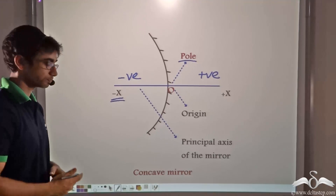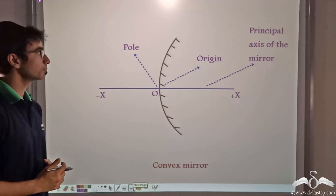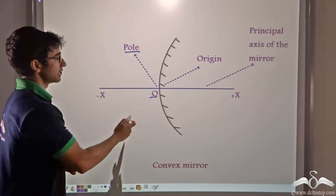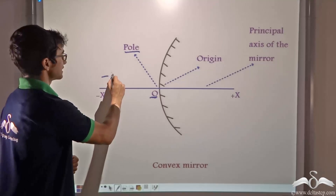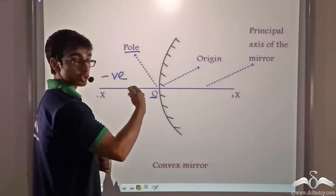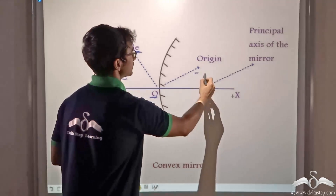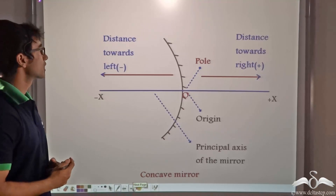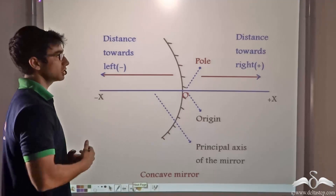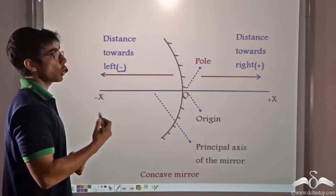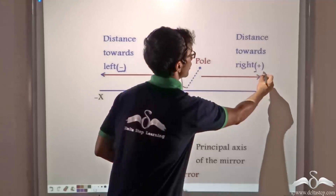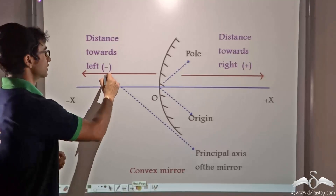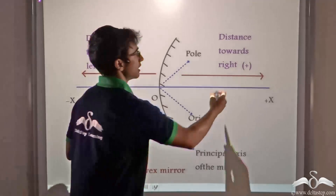In the case of a convex mirror, the pole is also considered as the origin and the principal axis is considered as the x-axis. All points to the left are measured as negative and all points to the right of the pole are measured as positive. All distances measured towards the left of the origin or pole are negative, and all distances towards the right are positive.